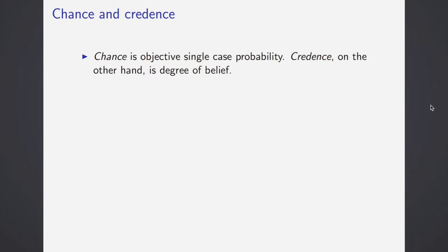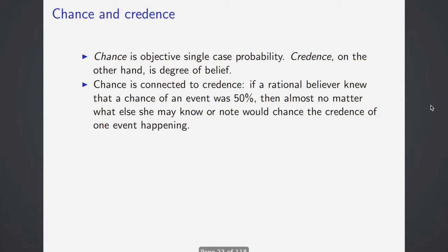Let's take a look at what he means by these terms. Chance is taken to be the objective single-case probability, it's a sort of metaphysical property that's in the world. Credence, on the other hand, is degree of belief. Chance being the metaphysical concept, the thing that's there, and then credence is the epistemological concept, it's how to believe on the basis of chance.